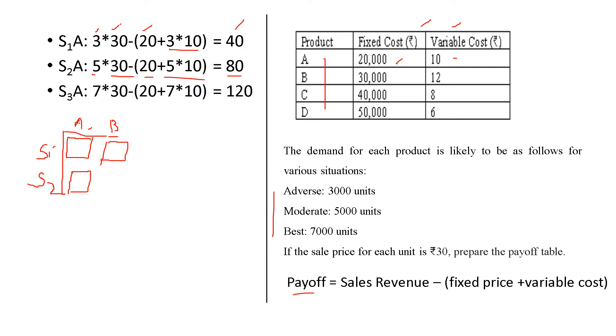For S3, best situation, 7,000 units. 7 into each unit, 30 rupees minus 20. 20 is the fixed cost. So, 20 plus 7 into 10. That is 120.